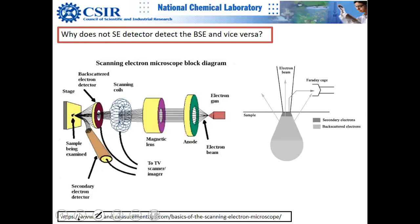Why does the secondary electron detector not detect backscattered electrons and vice versa? The secondary electron detector is at the side, and backscattered electrons are ejected with much higher velocity. By virtue of their higher velocity, backscattered electrons are more likely to travel straight and are less likely to be deflected toward the SE detector by the positive voltage.